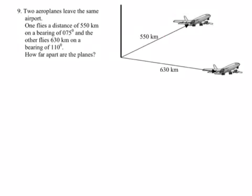And the other flies 630 kilometres from here to here on a bearing of 110 degrees, which is the angle represented here. How far apart are the planes?